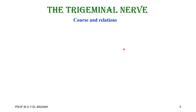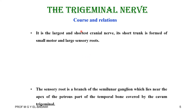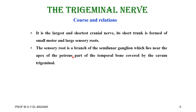Regarding the course and relations: it is the largest and shortest cranial nerve. Its short trunk is formed of a small motor root and a large sensory root, which passes near the cavernous sinus. The sensory root is a branch of the semilunar ganglion, which lies near the apex of the petrous part of the temporal bone, covered by dura — called the cavum trigeminale.